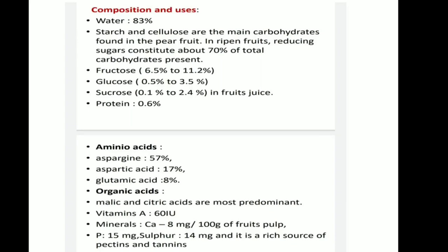Malic and citric acids are the most predominant organic acids. Vitamin A is 60 IU. Minerals include calcium 8 mg per 100 g of fruit pulp, phosphorus 15 mg, and sulfur 14 mg. Pear is also a rich source of pectins and tannins.